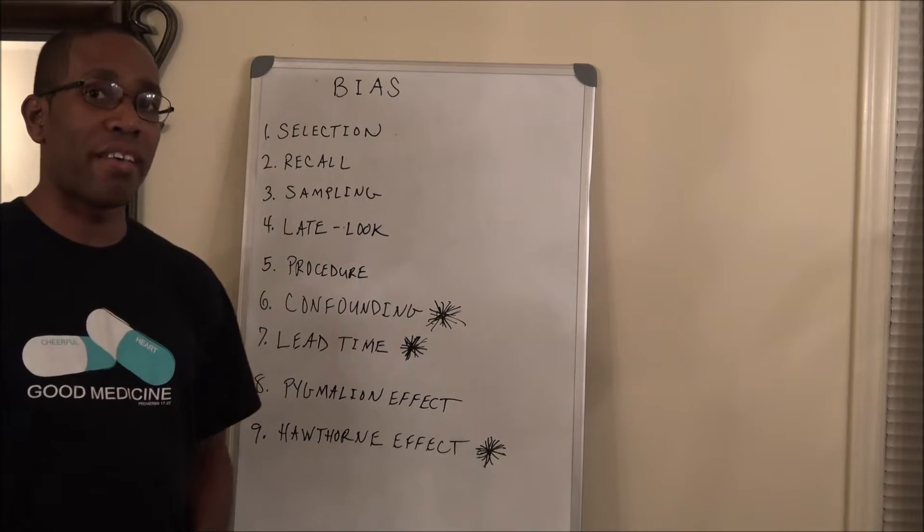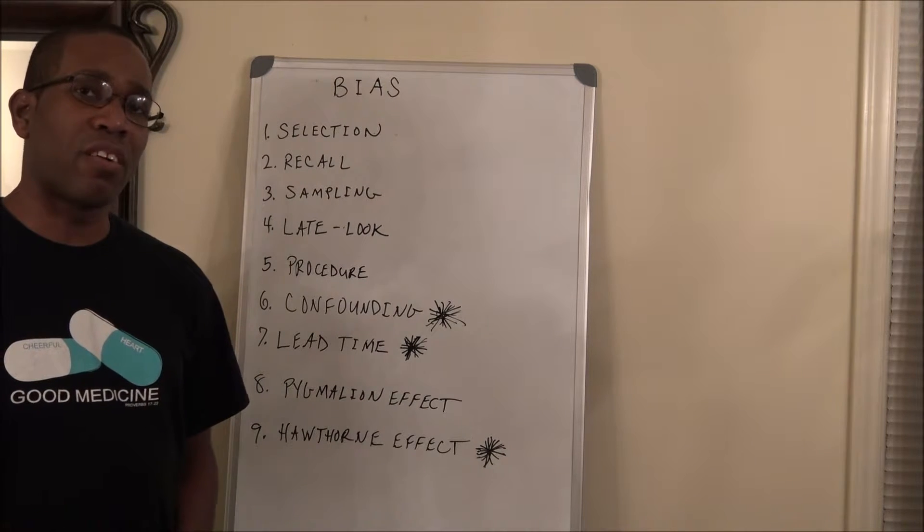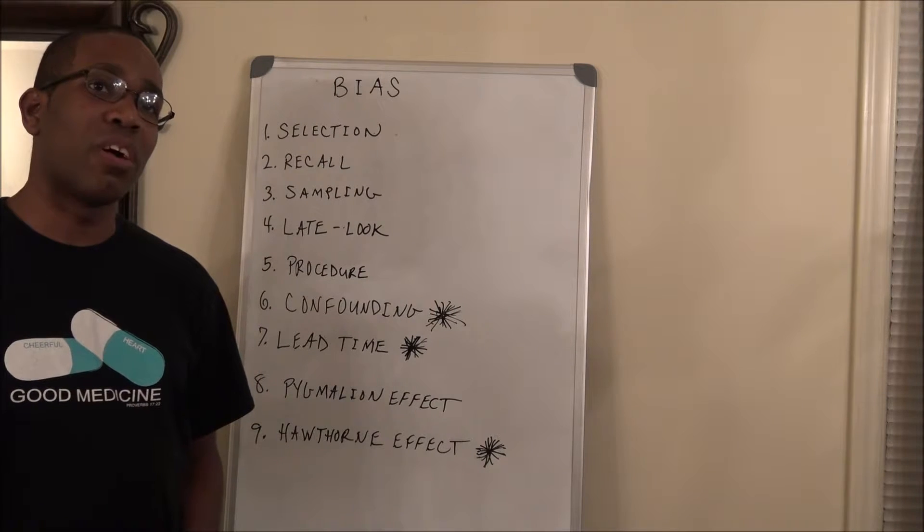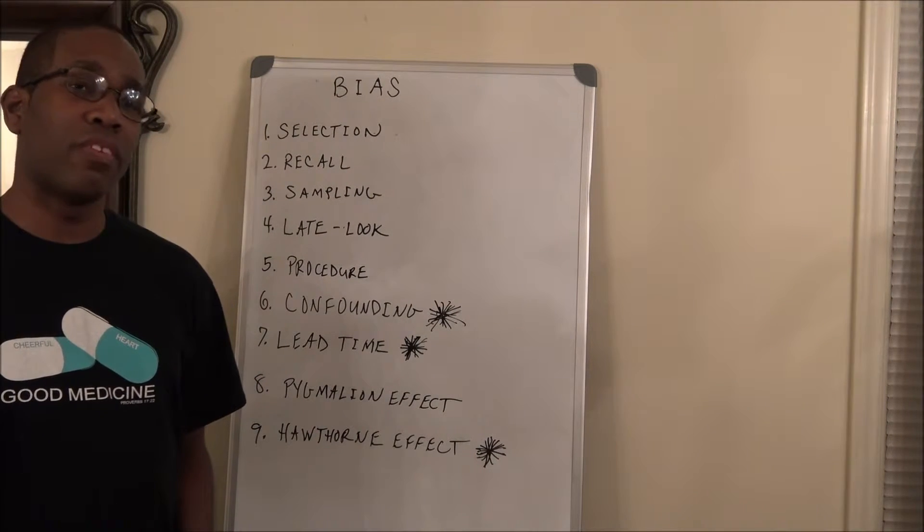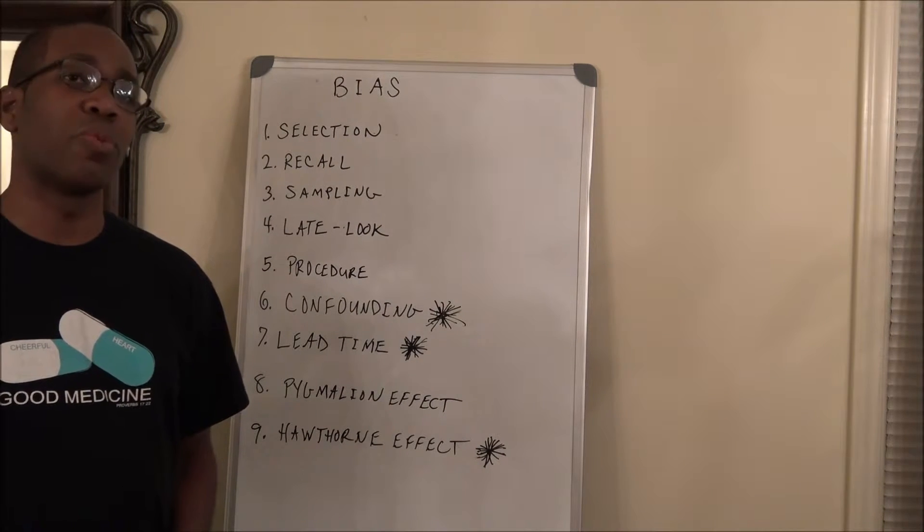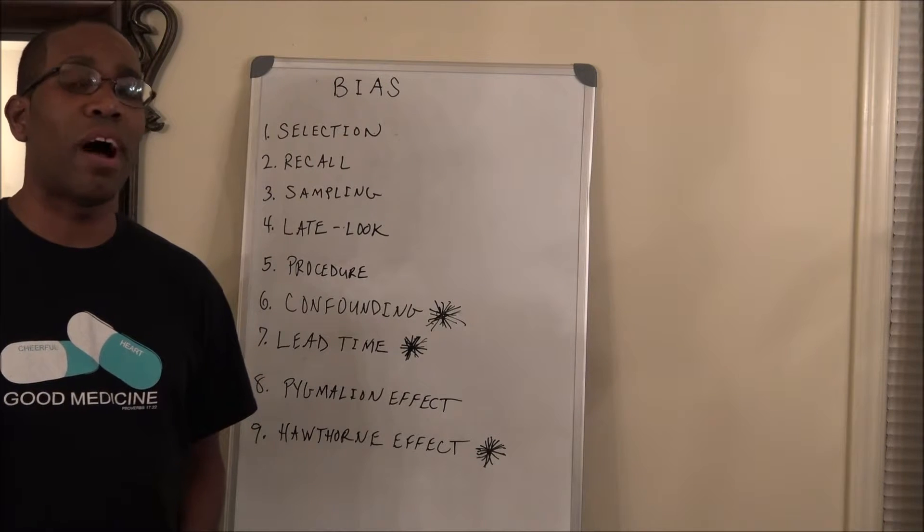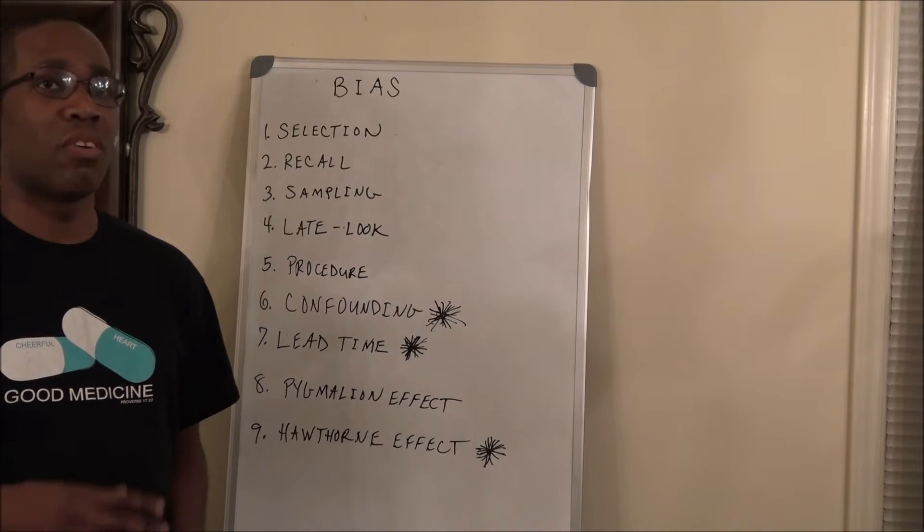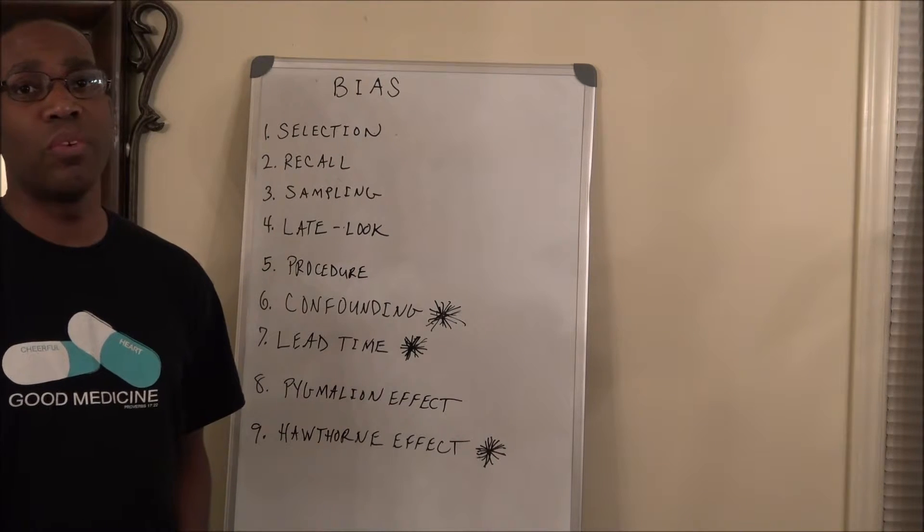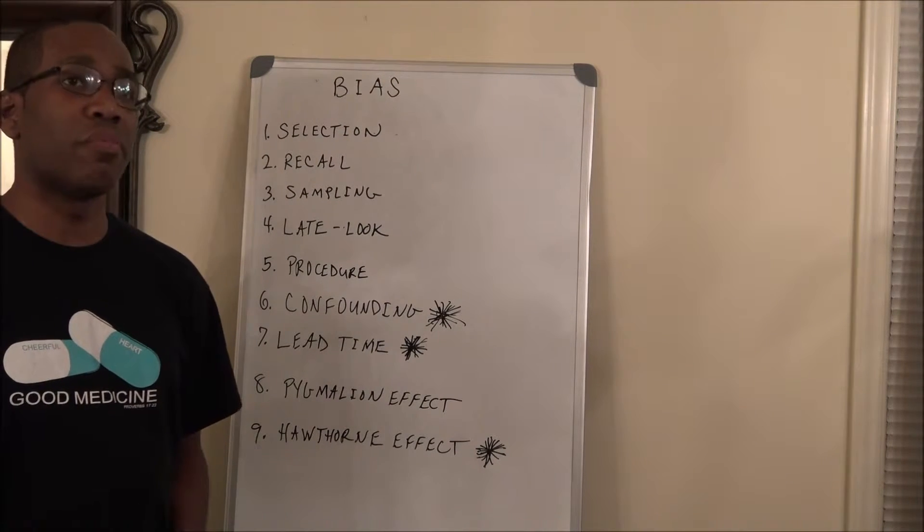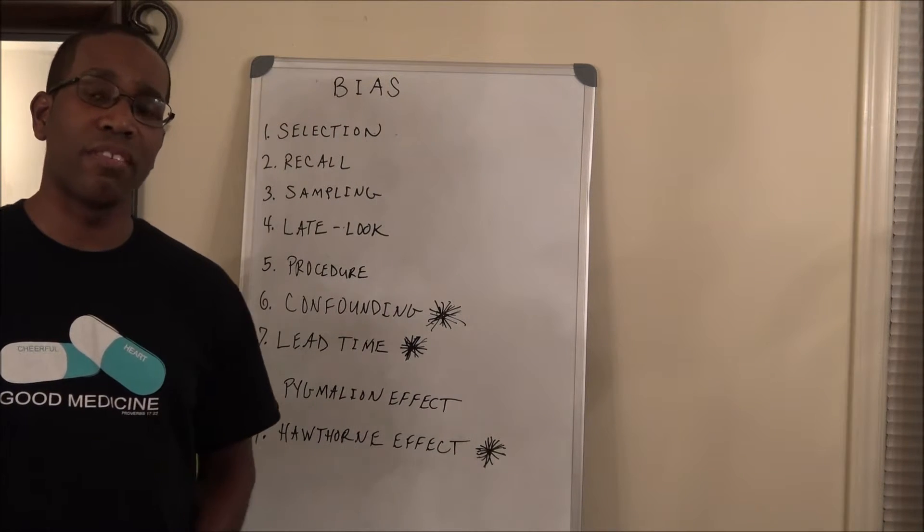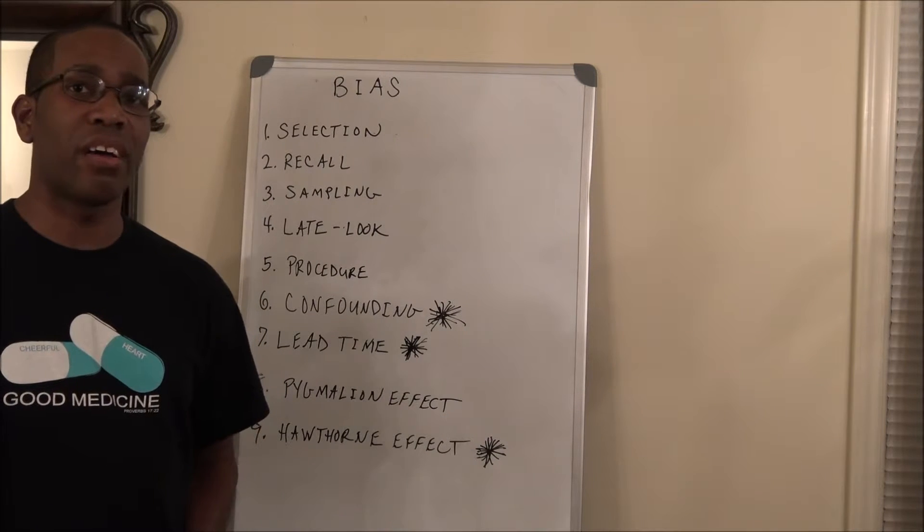As far as late-look bias, that occurs when people are looking at fatal diseases, or diseases where a lot of individuals have already died. You're not getting a random sample of the general population, especially when you're looking at diseases that have a high fatality rate. Not including those individuals who have already died is going to give you skewed results. So you need to be cognizant of that when you're looking at any kind of studies that have high fatality rates.